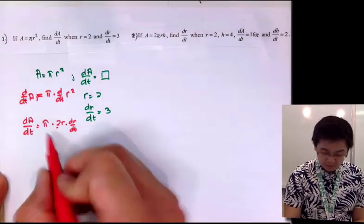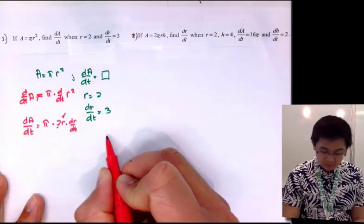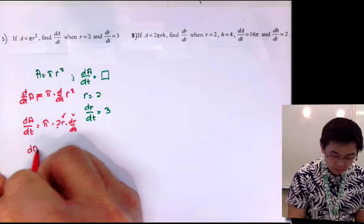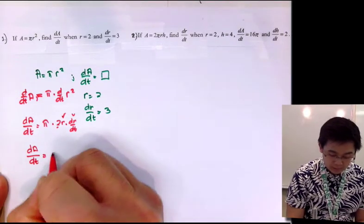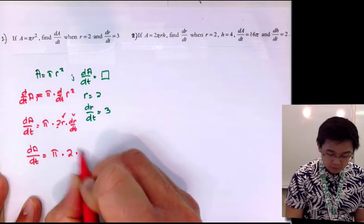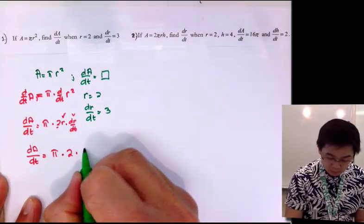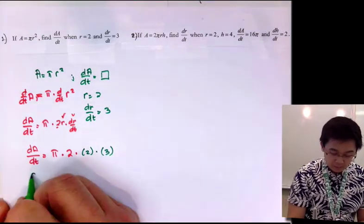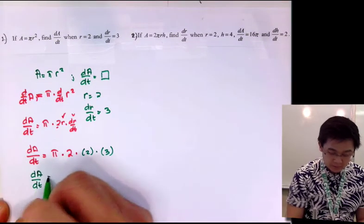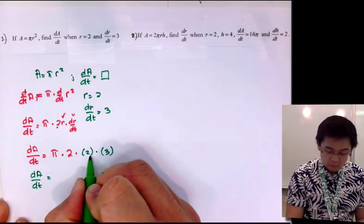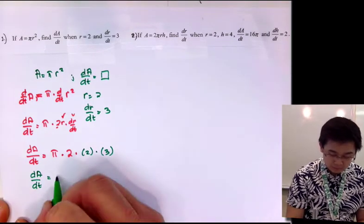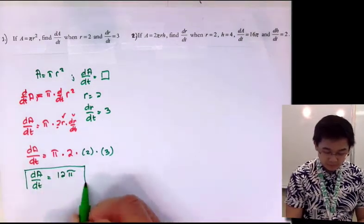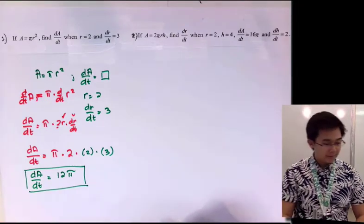By substitution, we have the value of r and dr/dt, so we can find dA/dt. We get pi multiplied by 2, multiplied by r which is 2, multiplied by dr/dt which is 3. Therefore, dA/dt equals 2 times 2 is 4, times 3 is 12pi. So the answer to problem one is 12pi.